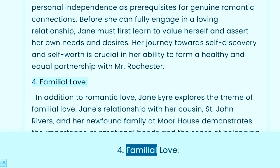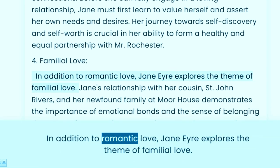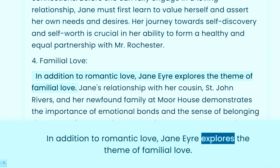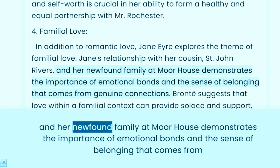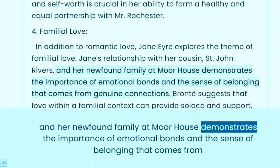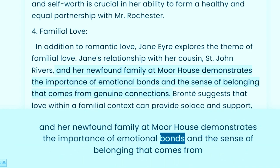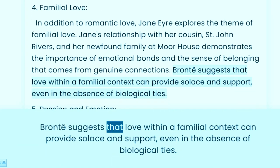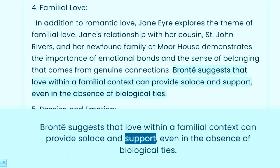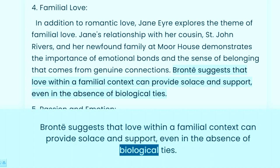4. Familial Love. In addition to romantic love, Jane Eyre explores the theme of familial love. Jane's relationship with her cousin St. John Rivers, and her newfound family at Moe House, demonstrates the importance of emotional bonds and the sense of belonging that comes from genuine connections. Brontë suggests that love within a familial context can provide solace and support, even in the absence of biological ties.